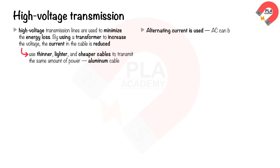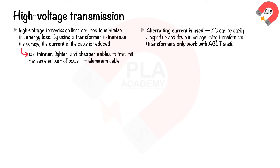Alternating current is used for transmission because it can be easily stepped up and down in voltage using transformers. This means that transformers only work with AC and will not work with DC. The following calculation demonstrates why less power is lost from a cable when power is transmitted at high voltage.